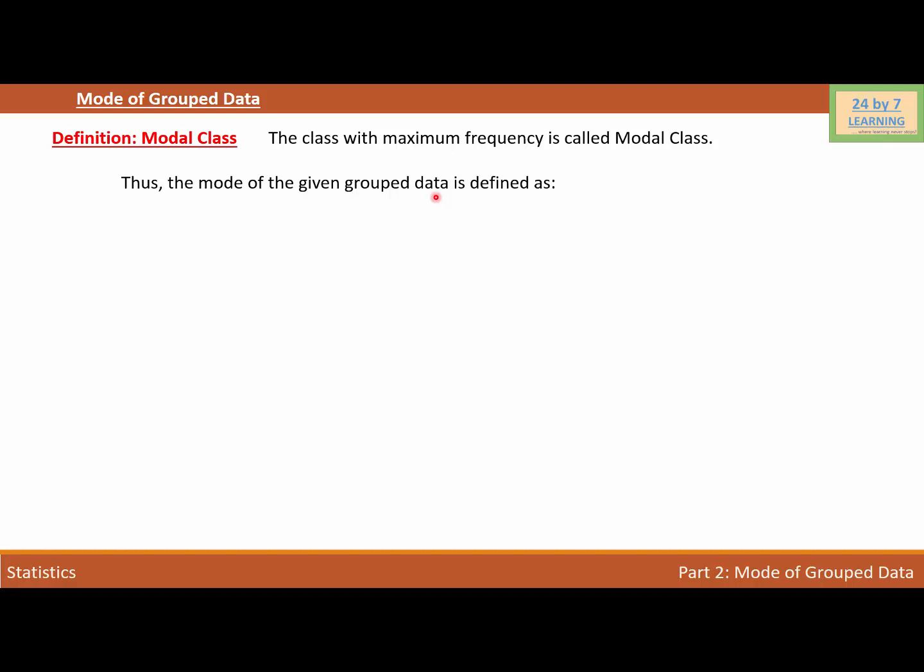Thus, the mode of the given grouped data is defined as: Mode equals L plus, inside the bracket, f1 minus f0 over f1 minus f0 minus f2, times h, where L is the lower limit of the modal class.